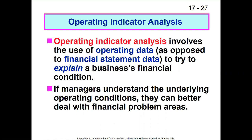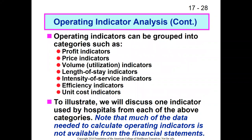Here we're using not just financial measures, but we're going to mix in some operating data as well. We're going to take things like net income or revenue, and divide it by operating measures like length of stay, number of discharges, or number of visits. So we're blending together financial measures as well as operating measures.